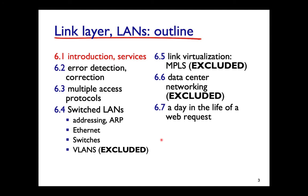Some sections are excluded — virtual LANs, link virtualization, 6.5 and 6.6. We are going to cover error detection, multiple access, switched LANs, and end with some notes in 6.7. Let's have a look at the introduction and what sort of services we get out of the link layer.